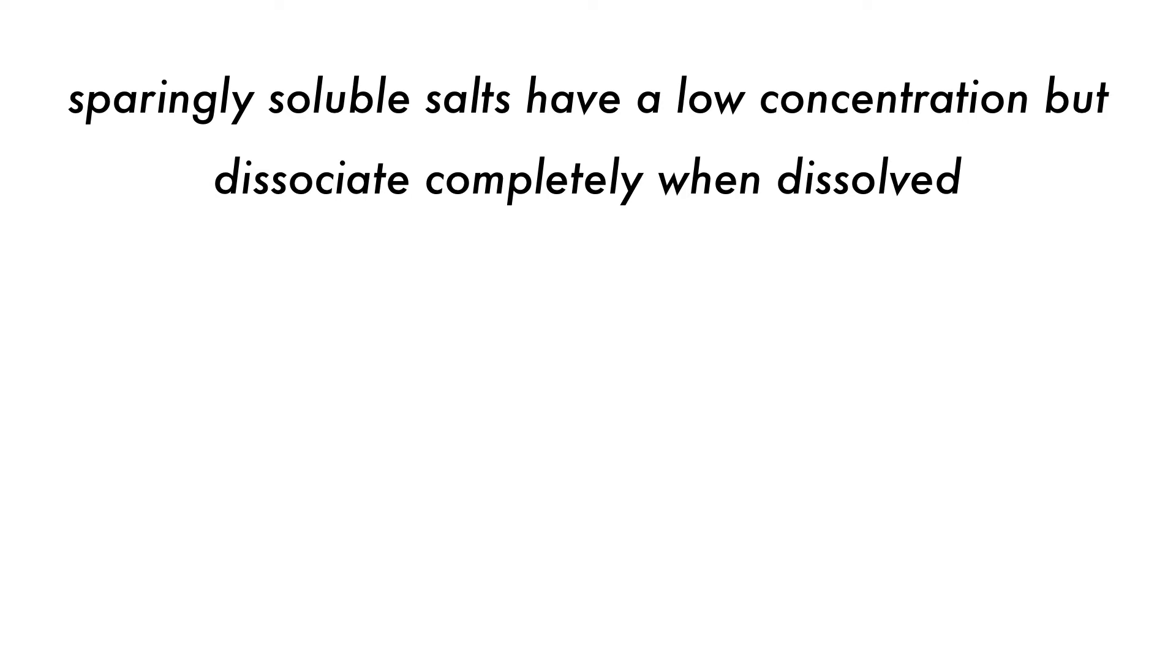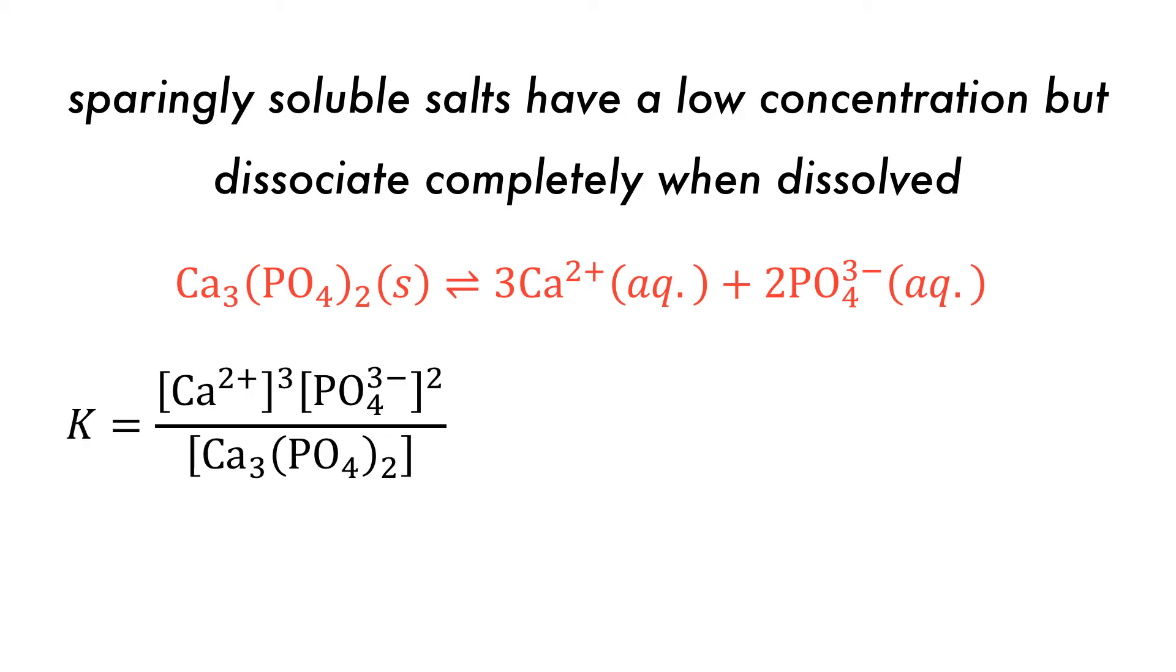A sparingly soluble salt will have a low concentration, but those species which are dissolved will be completely dissociated. Calcium phosphate, one of the main components of kidney stones, is an example. An equilibrium constant of the equilibrium between the solid and dissolved species can then be written.